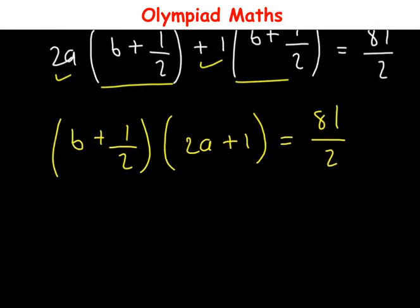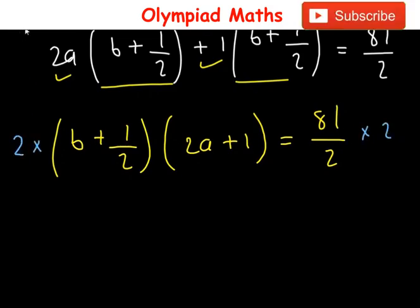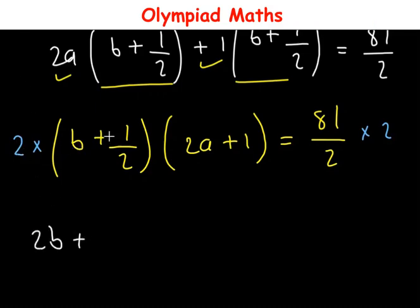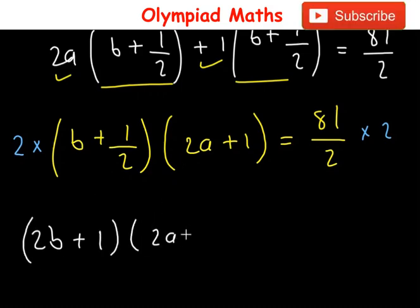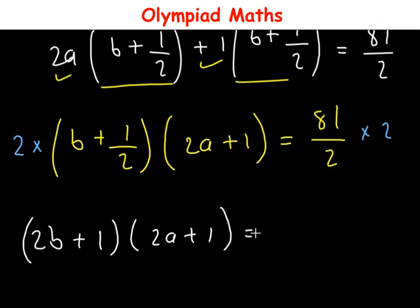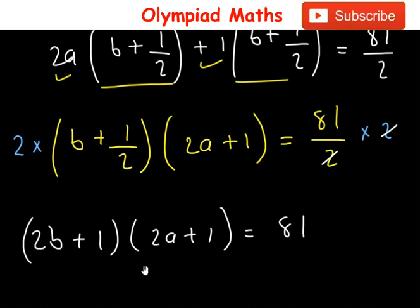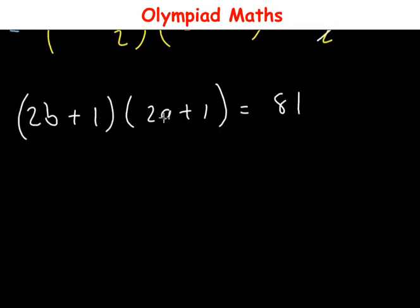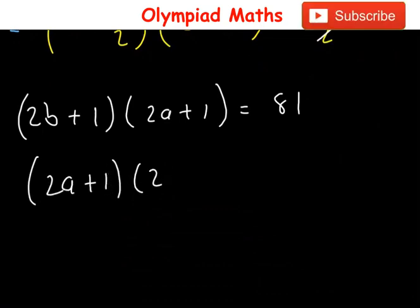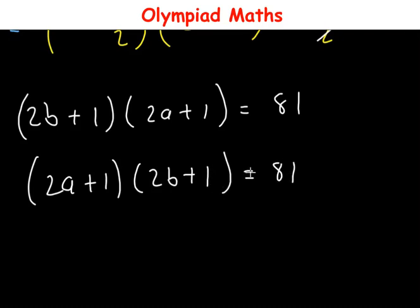At this junction, we're going to multiply this equation by 2. So we have 2 times (b + 1/2), which gives 2b + 1, multiplied by (2a + 1), and this equals 81. So we can rewrite this as (2a + 1) multiplied by (2b + 1) equals 81.